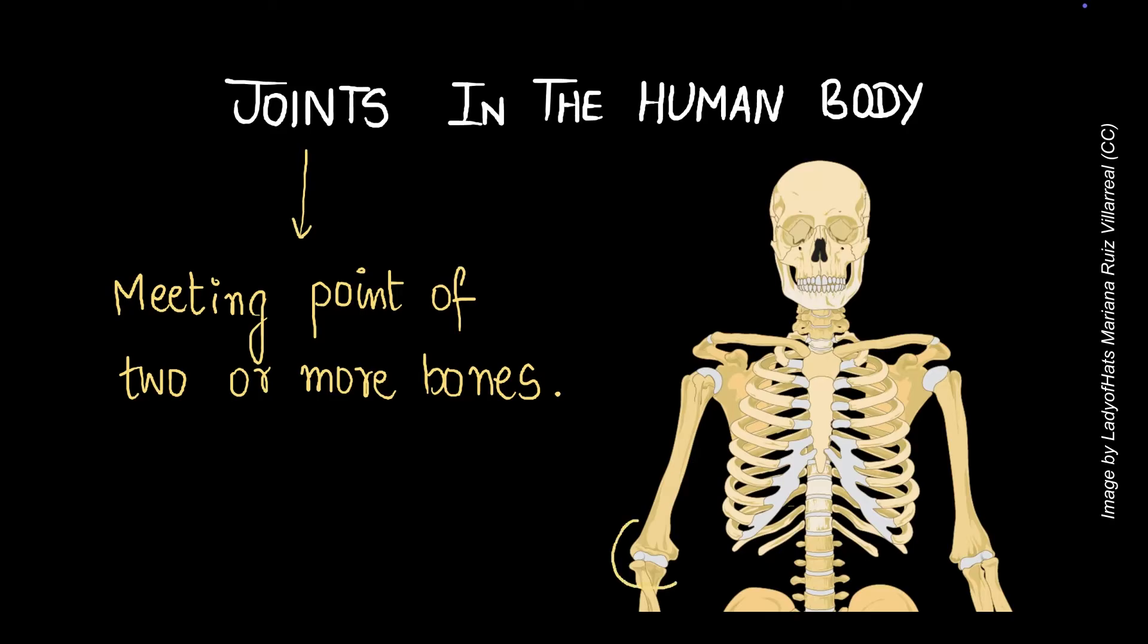At the elbow, we have three bones meeting and that is a joint. At the shoulder, we have bones meeting that also qualifies as a joint. Even at the jaw, there are bones meeting that qualifies as a joint too.